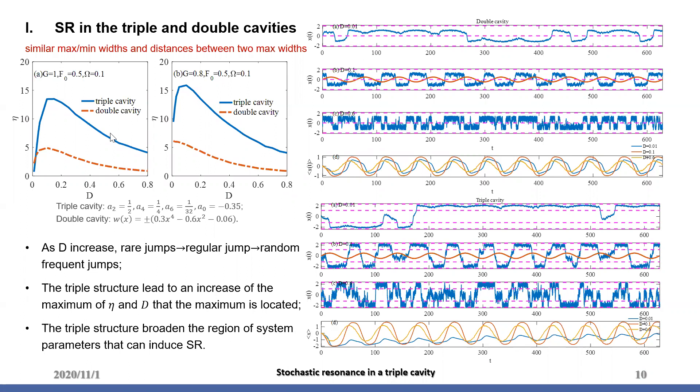Figure A shows that eta in the triple cavity is larger than in the double cavity, and that the d where the maximum is located is larger. Figure B shows that the triple structure can broaden the region of system parameters that can induce SR.